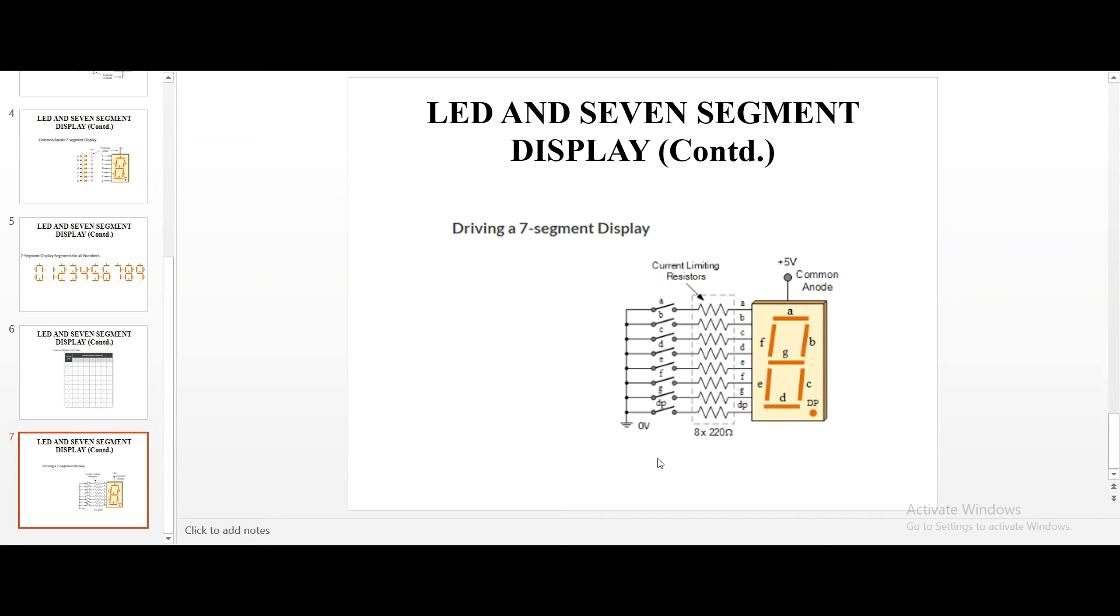So, I will explain what is the need for this resistor and for switch. Before that, you have to understand that for this common anode, all the positives are commonly given as 5V. And all the cathodes are grounded. How will we obtain 0s and 1s here? If we close the switch, we will get 1. 1 means the signal is 1. It is 5V.